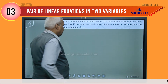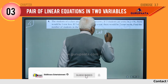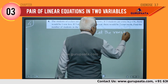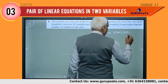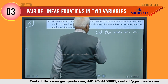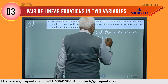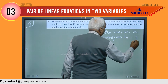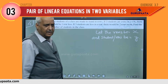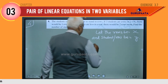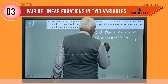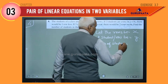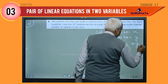First of all, what we will do? Let the number of rows be equal to x, and students per row be equal to y. The number of students equals x multiplied by y. Let this be equation number one.